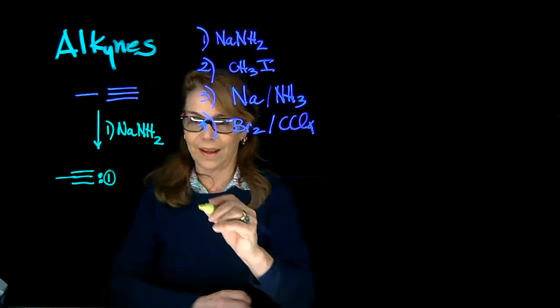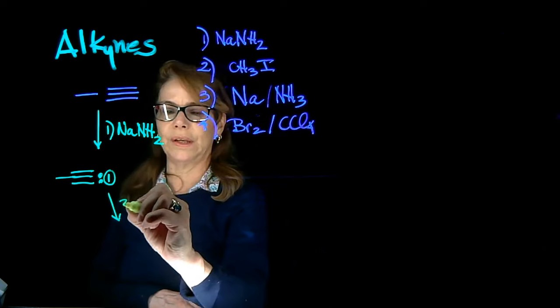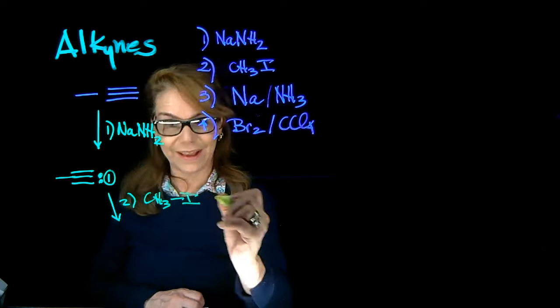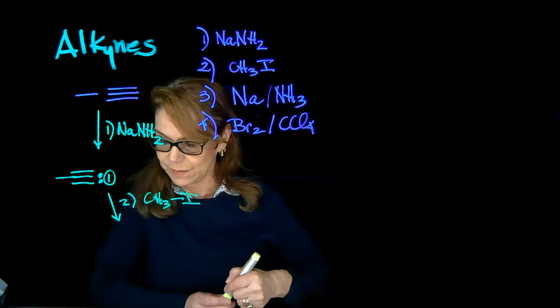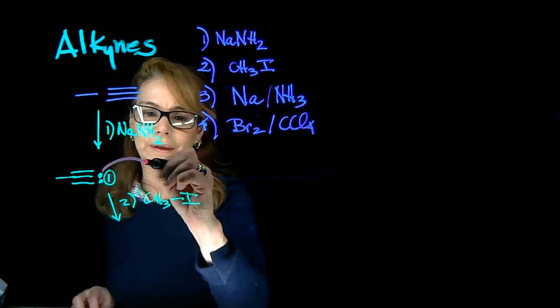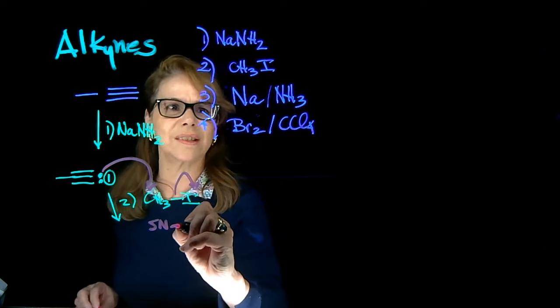Second step in the sequence, you're treating it with methyl iodide. So that step is an alkylation, and that proceeds as an SN2 reaction, as we have seen. SN2 attack. That's my alkylation step.